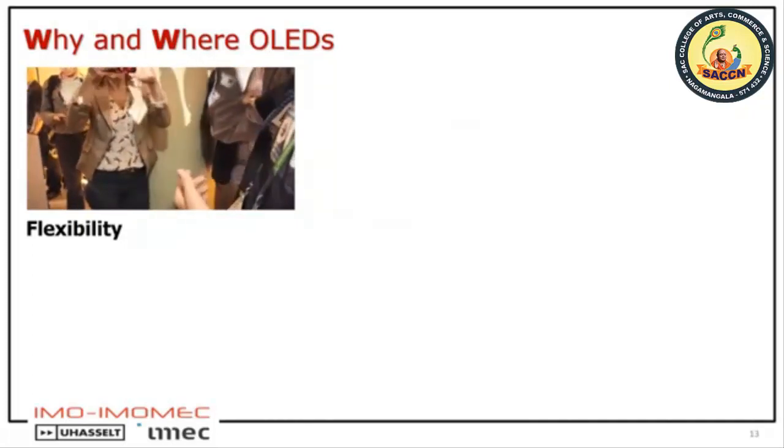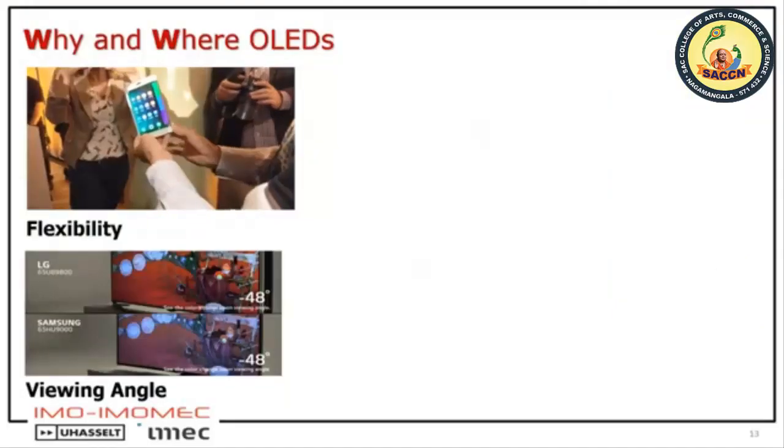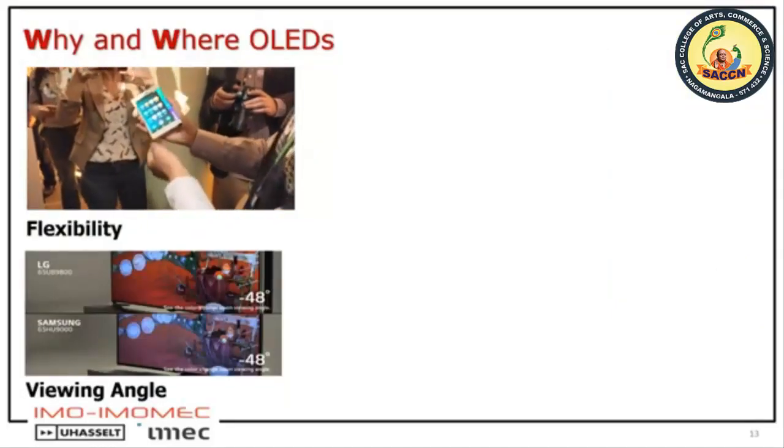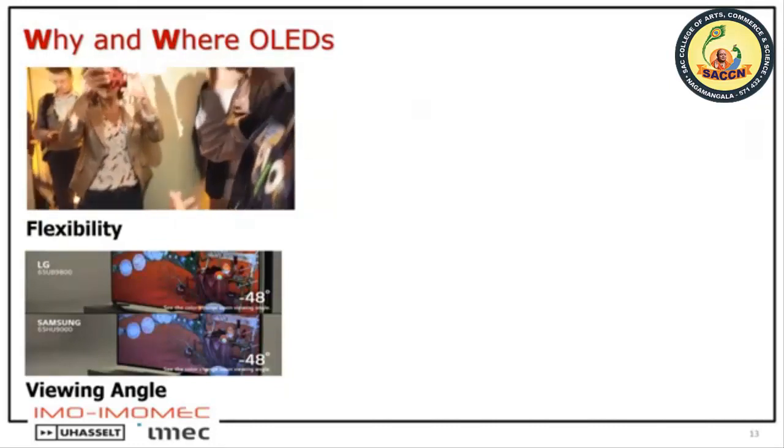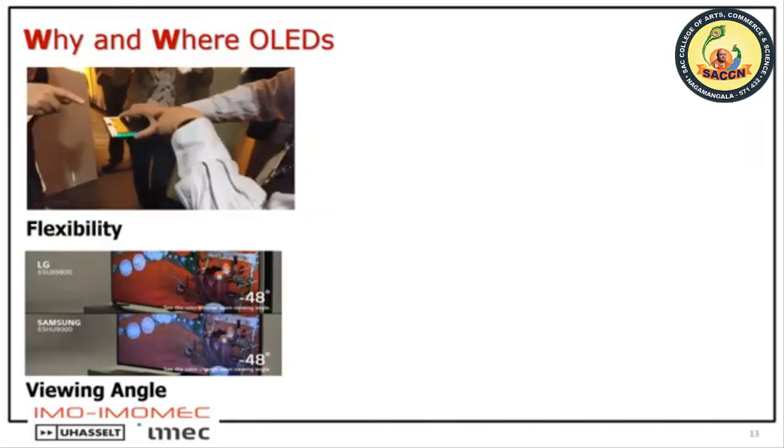You can also think about viewing angle. For semiconductor light emitting devices, the light emission is in a very small angle — a point source, very focused light. For organic light emitting devices, they have Lambertian radiation, meaning light goes in all directions. This means devices made for displays, but also for lighting, have a very broad viewing angle — very nice to watch.